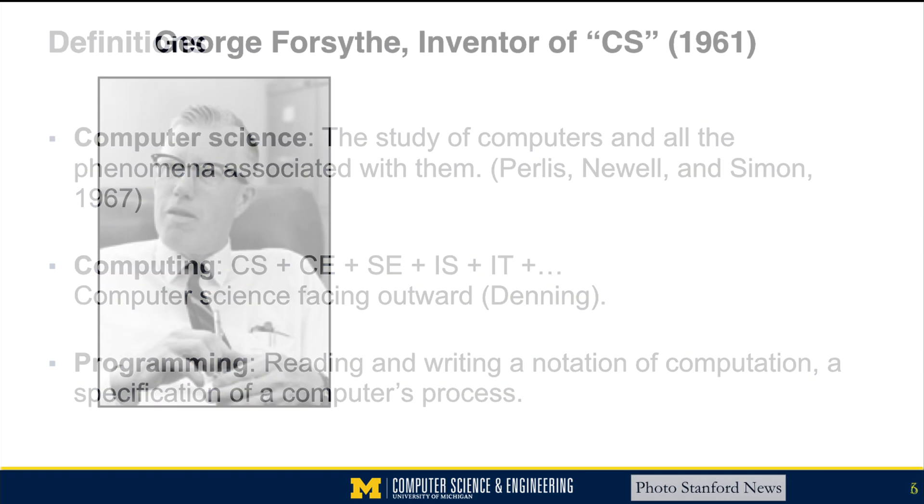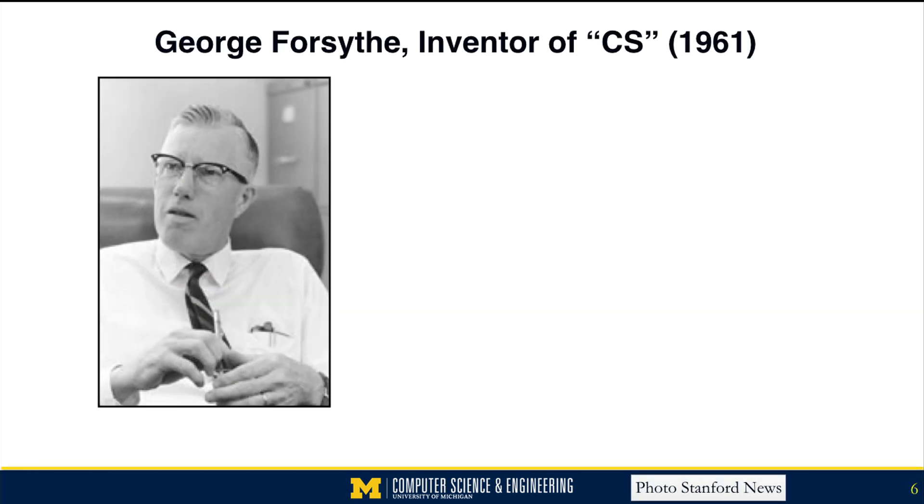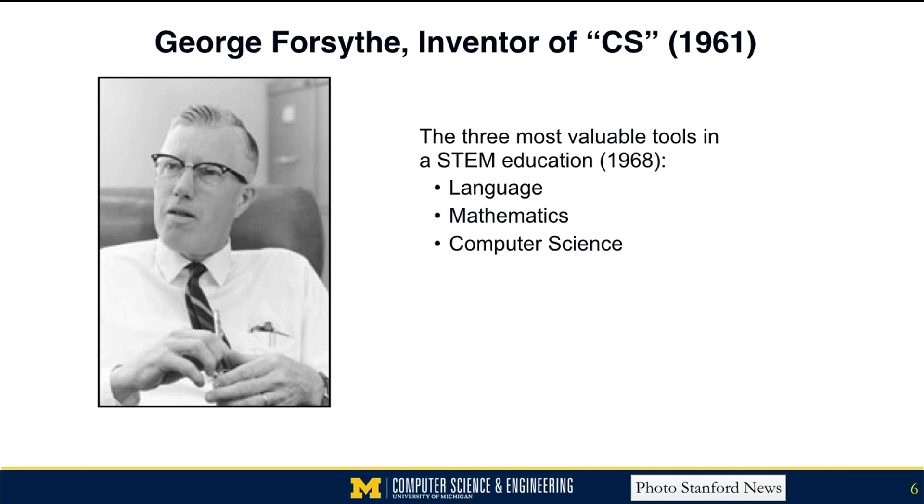This is George Forsyth, who many of you probably have never met before. He's actually the inventor of the term computer science. He first published it in 1961, of all places, in the Journal of Engineering Education.